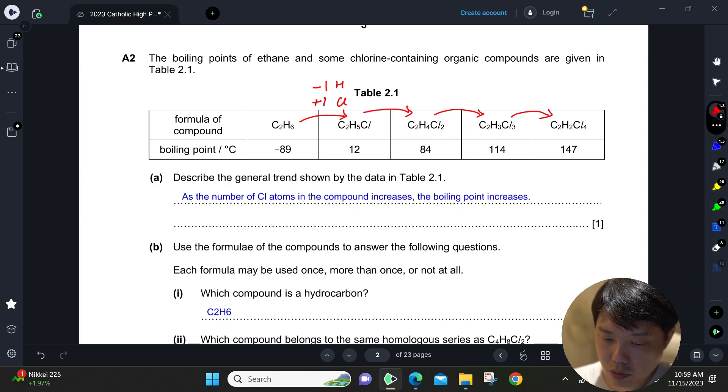Then what happens to the boiling point? If you can check the boiling point, it's actually increasing, increasing, increasing, and increasing. So the first question wants you to describe the general trend. As the number of chlorine atoms increases, the boiling point increases as well. So this is a general trend.